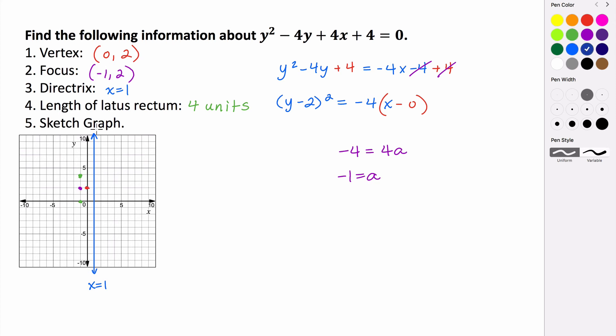So to sketch the graph, we're just going to graph a parabola that passes through the latus rectum and our vertex. So it's going to look something like this here. So that blue parabola is the graph of this equation here: y minus 2 quantity squared equals negative 4 times x.